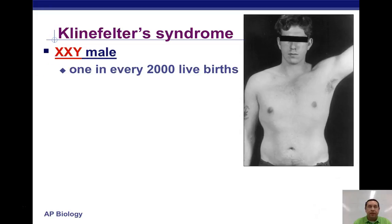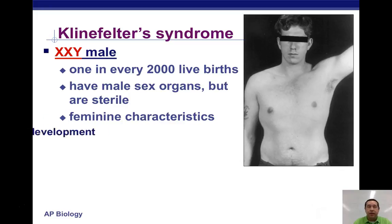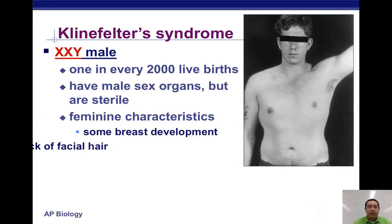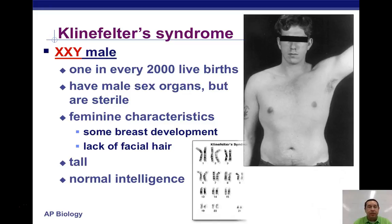Klinefelter syndrome occurs in one in every 2,000 births. Affected males have male sex organs but are sterile, and may show feminine characteristics such as breast development and lack of facial hair. They tend to be taller than usual, with normal to slightly below normal intelligence.